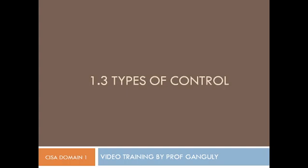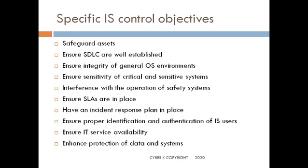The controls should look upon two factors basically. When the design of a control is being done, one should be very clear about what needs to be achieved and what should be avoided. The control should be in a position to address these two segments. There are certain specific IS control objectives.